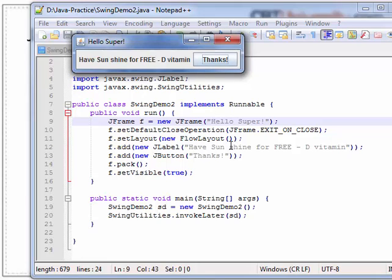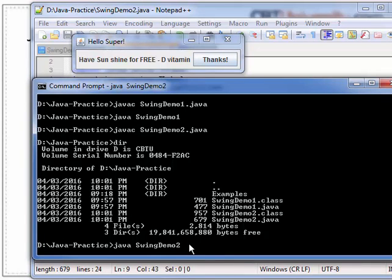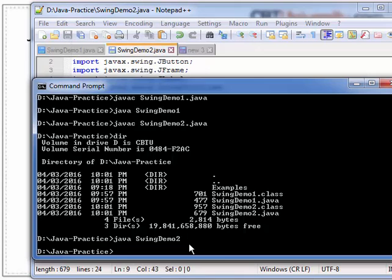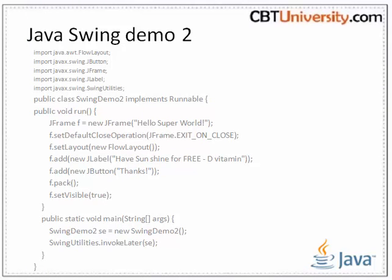Let us close this with Control+C and it exits. This is the same example as that we have seen in Demo 1, with minor tweaking. It imported the AWT and Swing components. We can have javax.swing.*, or we can have individual packages mentioned like JButton, JFrame, JLabel, and SwingUtilities.